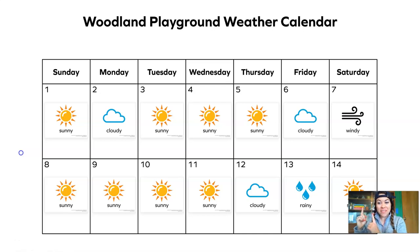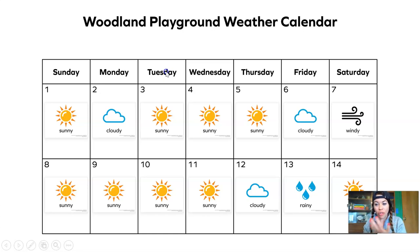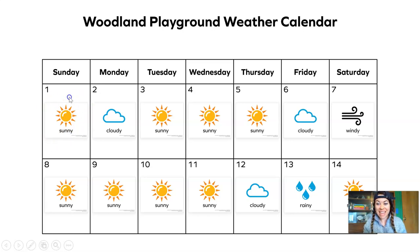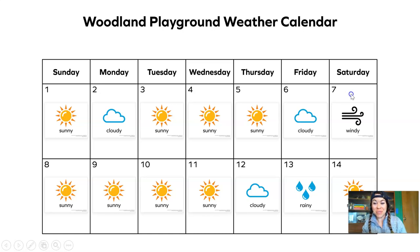Now check this out. This is the weather data for Woodland Elementary School's playground. You can see it's the same calendar — Sunday, Monday, Tuesday, and all the rest of the days of the week for two whole weeks. So we can see what the weather conditions were. Do you remember what this weather condition is that I'm circling? Yeah, this is sunny weather. What about this one? That's cloudy weather. Do you remember what this symbol means? Yeah, that's windy weather. And what about this one right here? Yes, that's rainy weather.